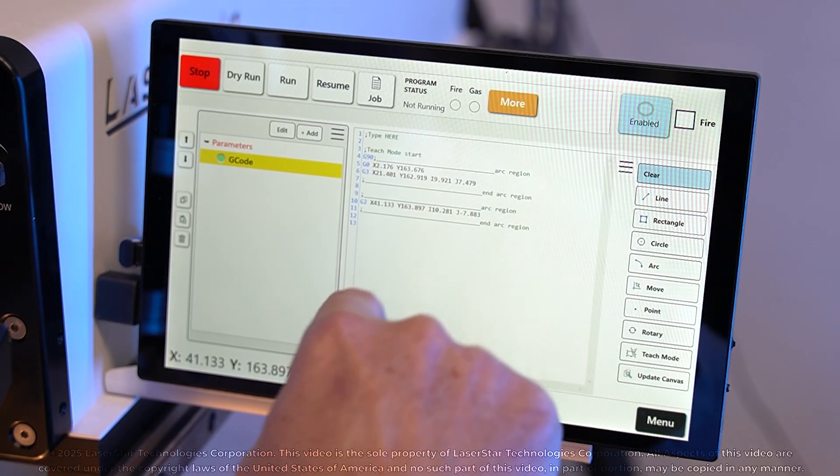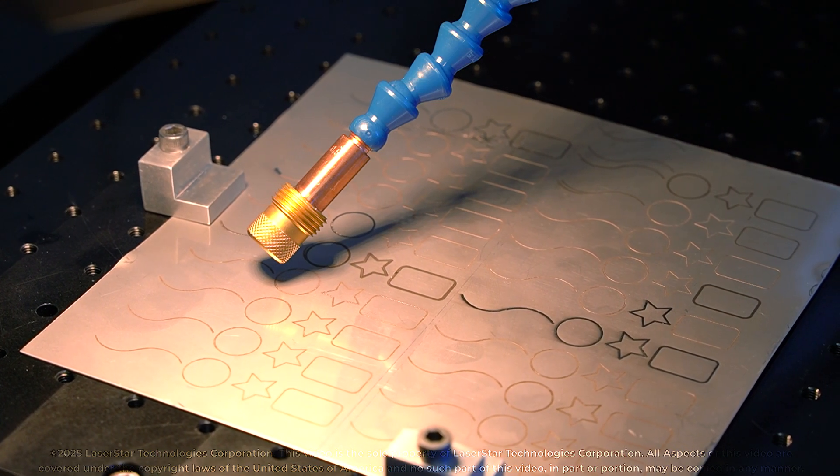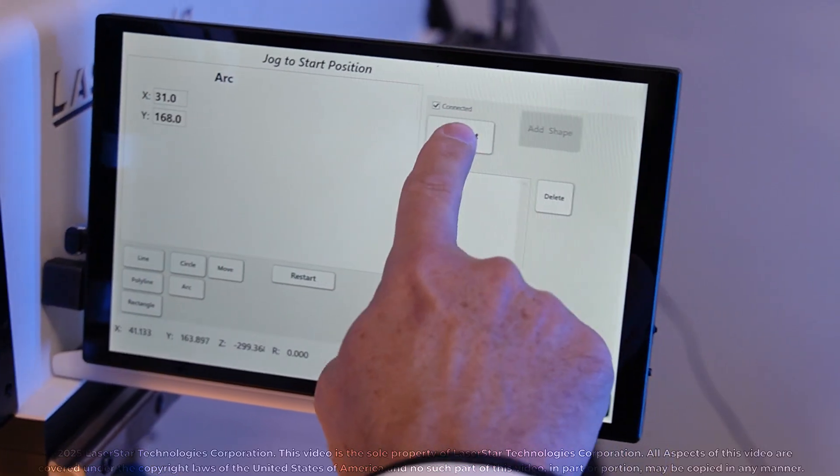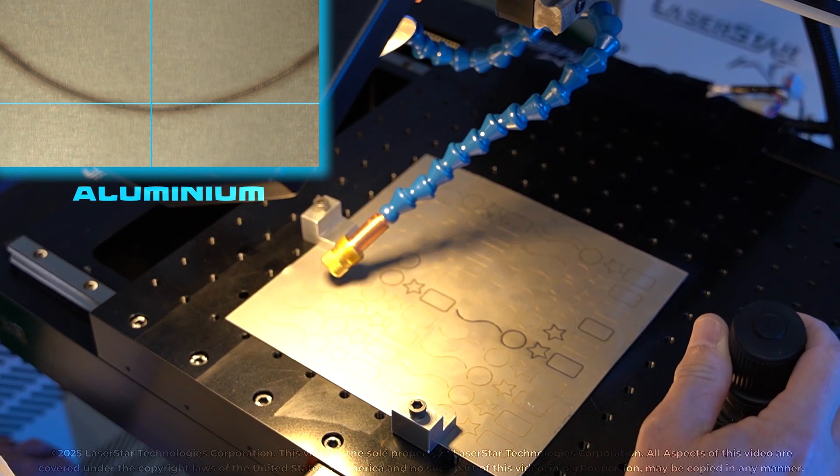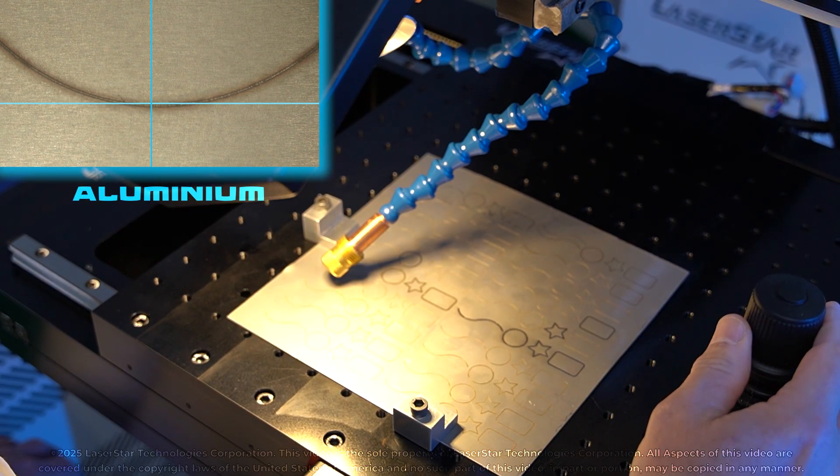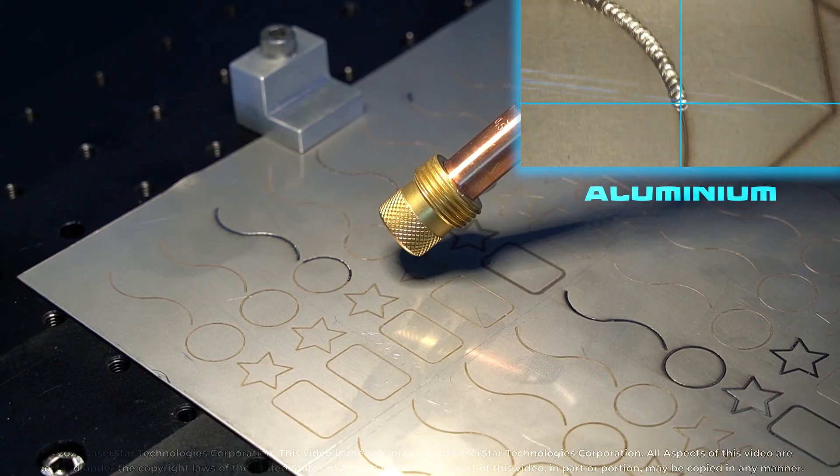Based on G-code, LaserStar's Motion Effects software makes writing programs easy through its intuitive teach mode module. Simply select your shape and plug in your coordinates to build a program that is tailored to your part's geometry. A preview of the program's geometry is readily available to ensure accuracy.